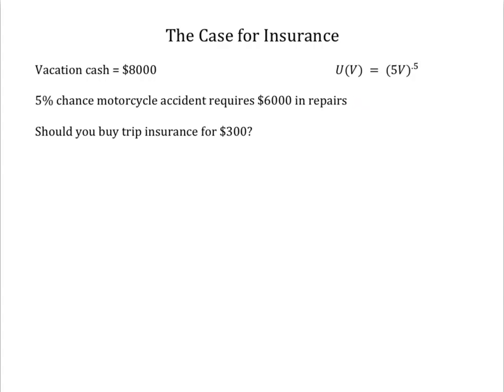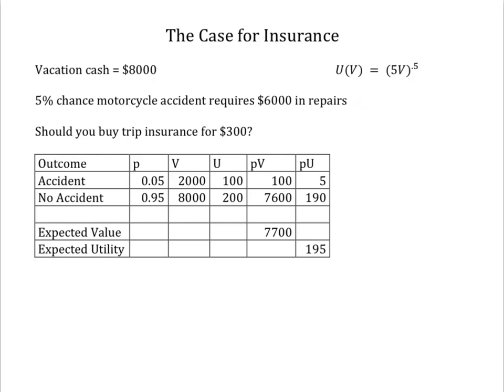Should you pay $300 for an insurance policy for your trip? Facing an uncertain event is like entering a lottery. There's a 95% chance you'll be able to enjoy your trip undisturbed, but a 5% chance you'll have only $2,000 to cover the other costs of the trip. Your expected value of this vacation lottery is $7,700. Your expected utility from this lottery is the sum of the utilities of each outcome weighted by its probability, or 195.